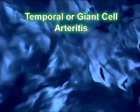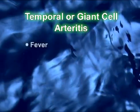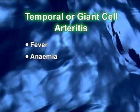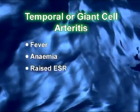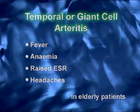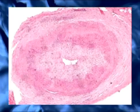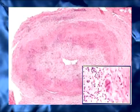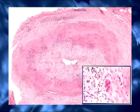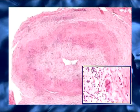Temporal or giant cell arteritis presents as a complex of fever, anemia, raised ESR and headaches in elderly patients. The diagnosis is confirmed by biopsy of the temporal artery, which shows a focal granulomatous lesion involving the entire arterial wall.